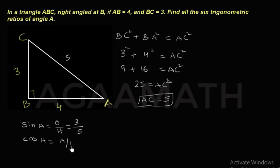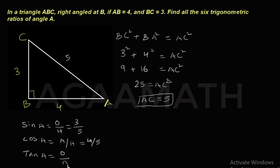Next, cos A — what is cos A? It is adjacent by hypotenuse. The adjacent side to angle A is 4 and the hypotenuse is 5, so cos A equals 4 by 5. Next, tan A — the ratio of tan A is opposite by adjacent. The opposite side is 3 and the adjacent is 4, so tan A equals 3 by 4.